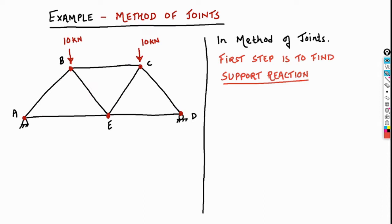In any method, including method of joints, the first step is to find the support reactions. Before finding the support reactions, we have to identify how many reactions we are going to get in the structure. At A, we have hinge support — we know that hinge support offers two reactions. And at D, we have roller support, which offers only one reaction.